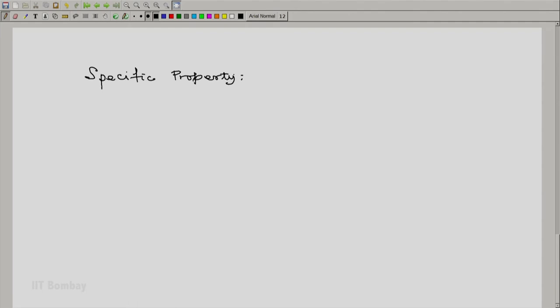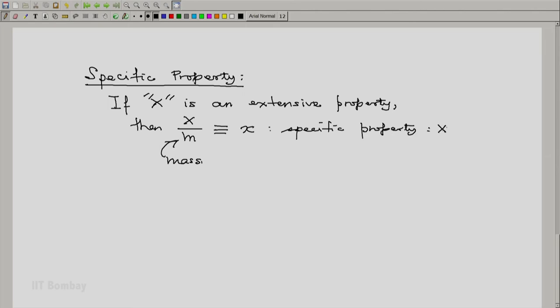Let us now look at what is meant by a specific property. The specific property is defined as follows: If X is an extensive property of a system, then X by M, where M is the mass of the system, is usually given the symbol x or a lowercase x, and X is then known as the specific property related to X.